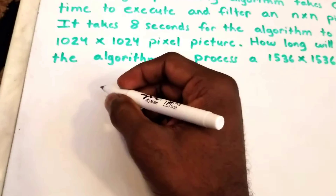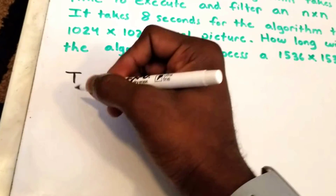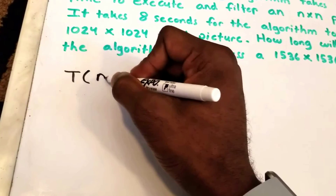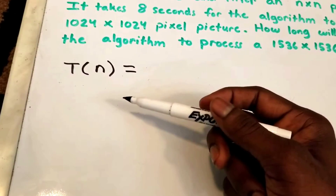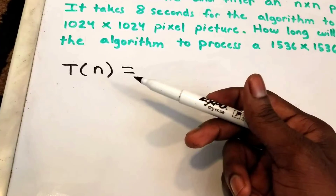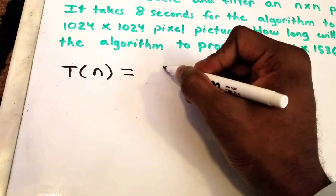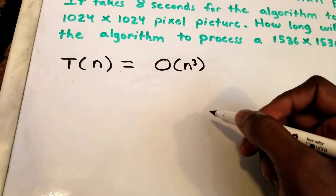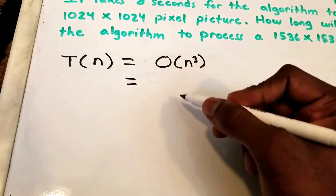First, we're going to set up our function. I'll call it t, standing for time. t takes some input size n, and this represents the time it takes for the algorithm to process an n by n pixel picture. From the question, it takes O(n³) time.